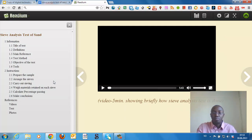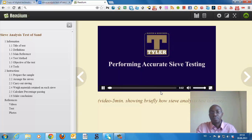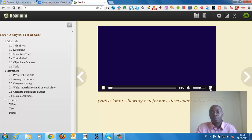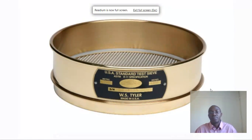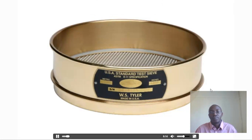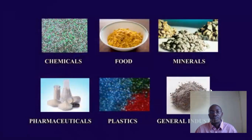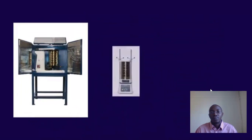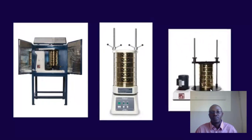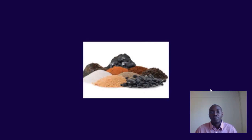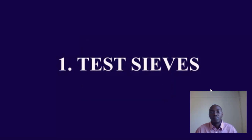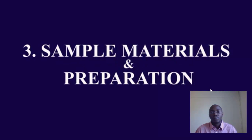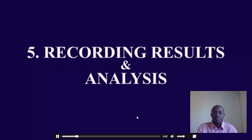You can put movies if you want. Here W.S. Tyler presents performing accurate sieve testing. Despite technology changing so rapidly, the test sieve remains a cost-effective and precise measuring instrument for dry, non-agglomerated particles. Sieve analysis is widely used for quality control in many industries worldwide. The process measures particle size in dry, relatively free-flowing materials. There are five basic elements: test sieves, test sieve shakers, sample materials and preparation, running the test, and recording results and analysis.